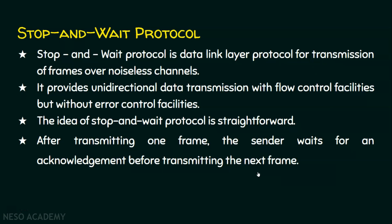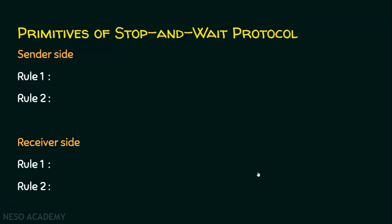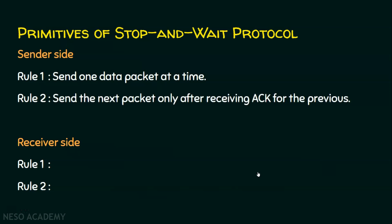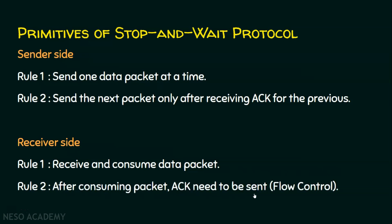The primitives of the stop and wait protocol include the sender side and the receiver side. On the sender side, rule number one is: just send one data packet at a time. Rule number two: send the next packet only after receiving the acknowledgement for the previous packet. On the receiver side: just receive and consume the data packet, and once consumed, send the acknowledgement back to the sender. This is the flow control mechanism of the stop and wait protocol. Let's see it with an animation.